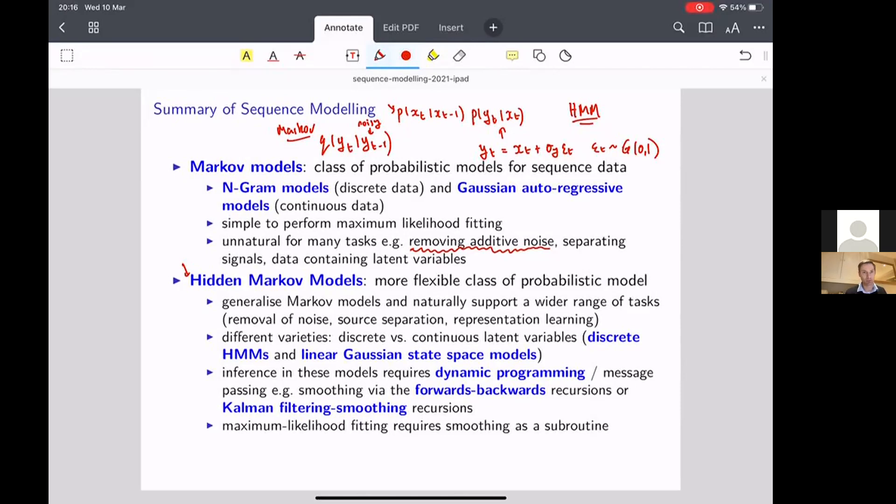These are a more flexible class of probabilistic model. Something I didn't mention at the time, but which is also interesting, is that hidden Markov models are actually a strictly more general model than Markov models. That is to say that they contain Markov models as special cases.